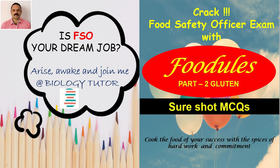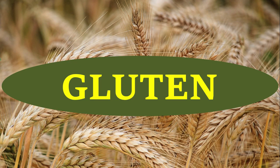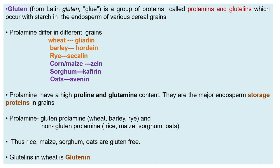Hi friends, welcome to Biology Tutor. Today we are going to discuss about gluten in today's food oils. Gluten is a group of proteins called prolamins and glutelins, which occur with starch in the endosperm of various cereal grains.